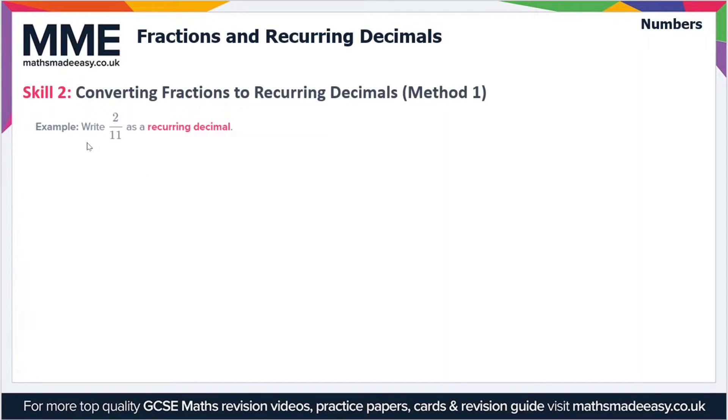First of all, let's have a look at one method which we can use. In this example we have to convert two elevenths to a recurring decimal. There's a sort of trick we can use which is the first method. What we're going to do here is convert this fraction so that the denominator contains nothing but nines.